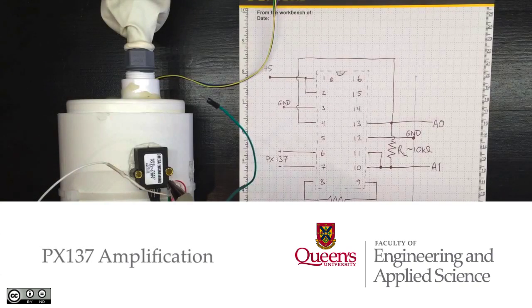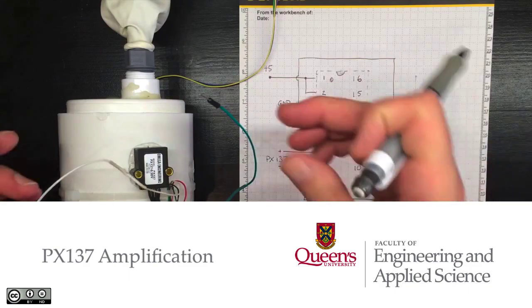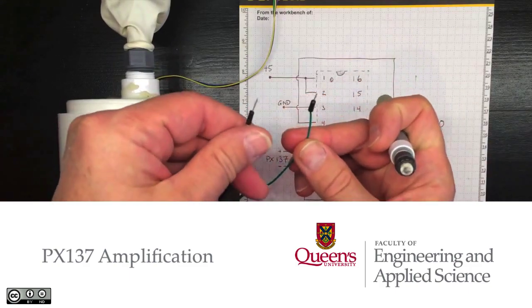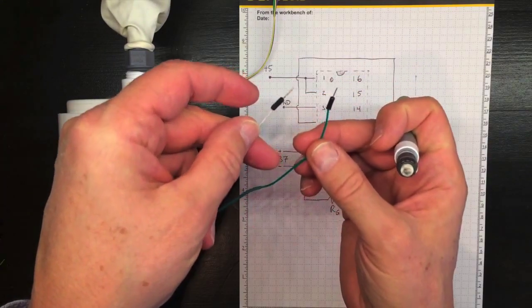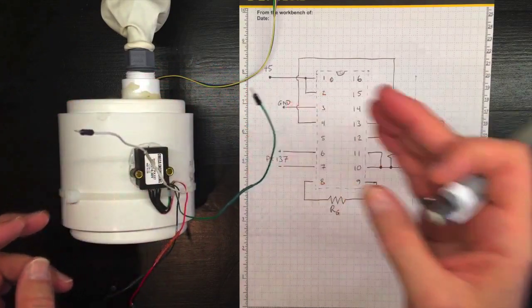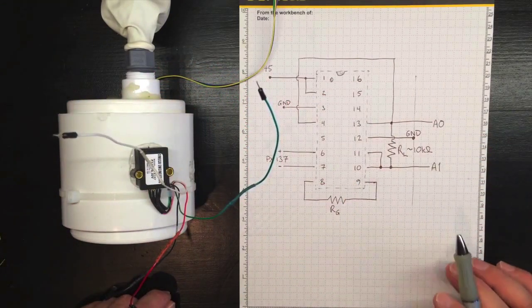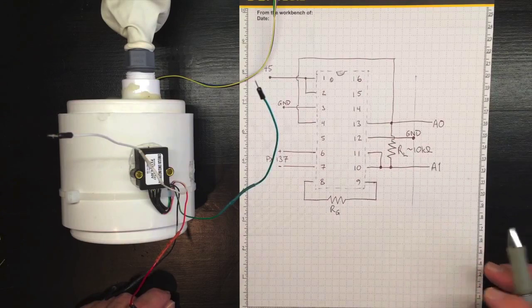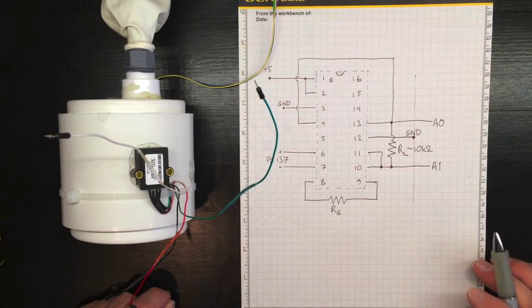Because the PX137 is a strain gauge-based transducer, the voltage you'll read on these two output lines is going to be quite low in the millivolt range. And as such, you'll need to amplify it once again to get it into the Arduino at a reasonable, readable voltage.